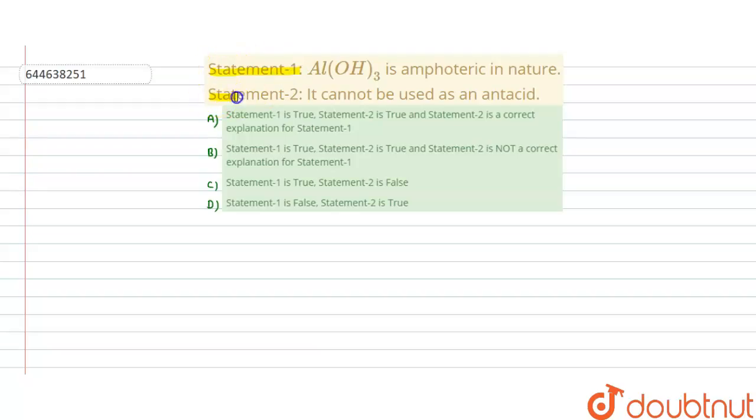Statement 1 and 2 are given. First says Al(OH)₃ is amphoteric in nature, and second is it cannot be used as an antacid. So first we write the compound which is Al(OH)₃.